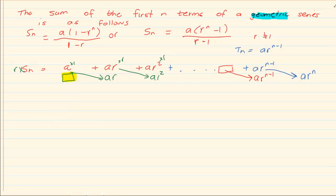So I am left with ar to the power of n. So what we have done is we have multiplied it with r. And r ended up being exactly the same as all the others. The only thing that was different is we missed the first one. And the last one we now have is ar to the power of n. So now we have rSn.